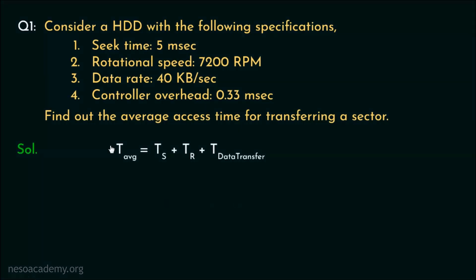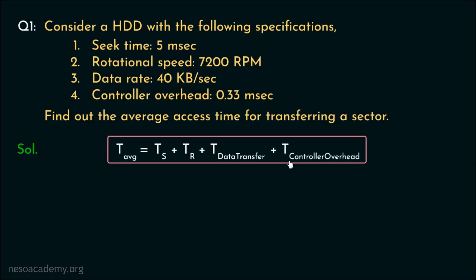We already know the average access time is seek time Ts, plus rotational delay Tr, plus T data transfer. In addition to this, in this specific problem, we will also have to consider the controller overhead in order to find out the average access time.